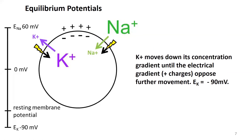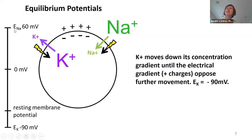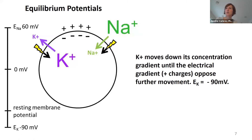Student: Can you explain what E-Na means? Dr. Carbry: That just means what is the equilibrium potential for sodium. The E is really standing for equilibrium potential for sodium, and in many cells it's going to be positive, something like 60 millivolts. Any other burning questions? I'm still going to keep talking about this concept for a little while longer.